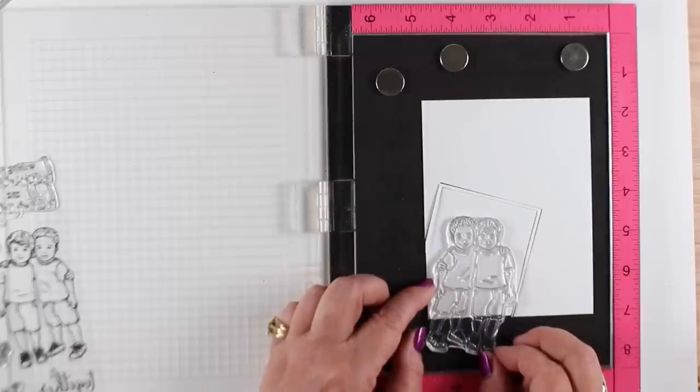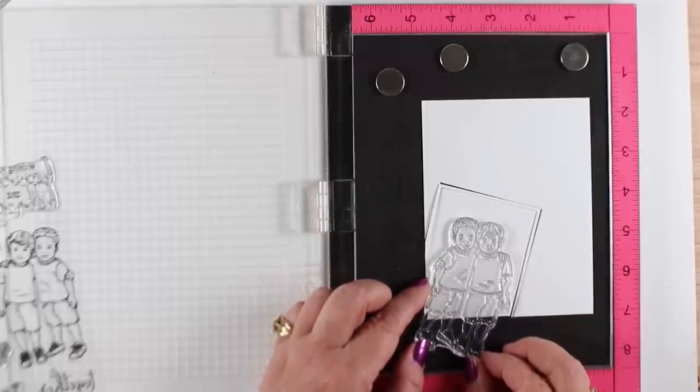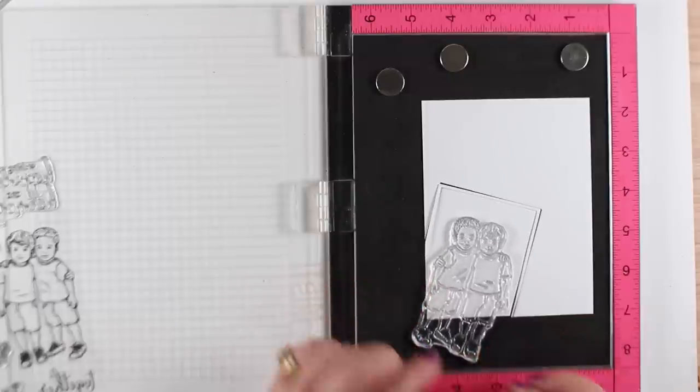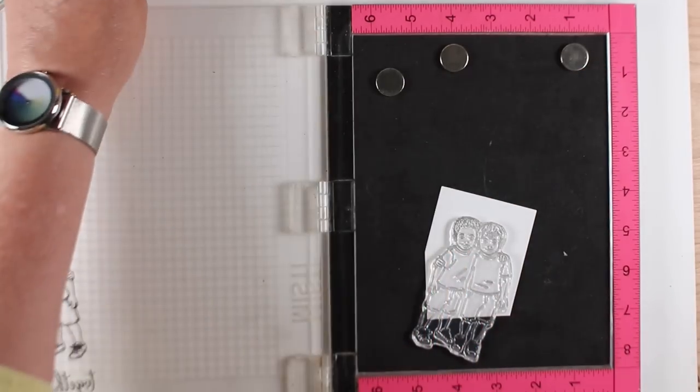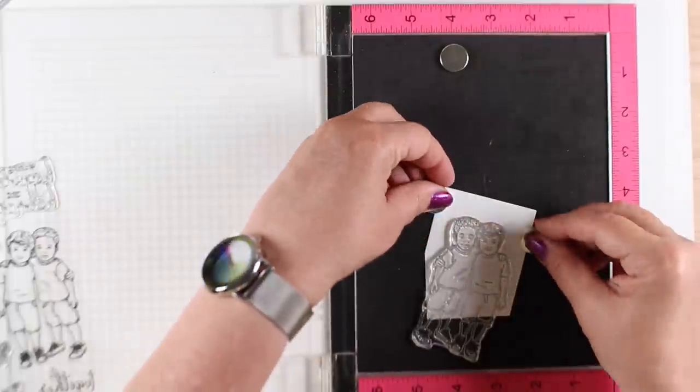This one is the little boys, and they're going to be off the left corner. So I lined it up so you can see it, but you don't actually need to put it all together when you're doing the stamping portion. I have it in my MISTI.